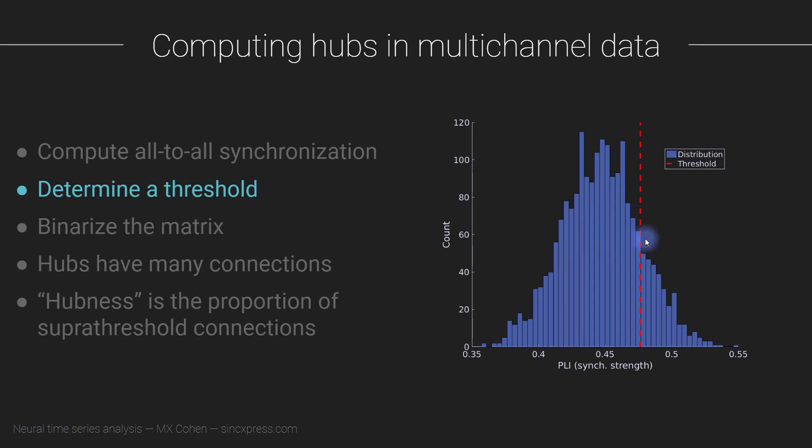You can pick any threshold you want. It's a trade-off - if you pick a more stringent threshold up here, you get less information, but it's more meaningful because you'll identify really strong hubs. If you pick a lower threshold, everything looks like a big hub and it's hard to make finer distinctions.